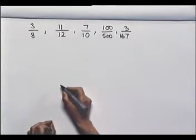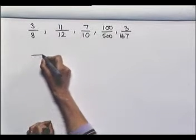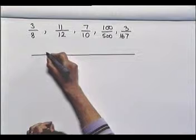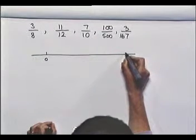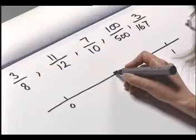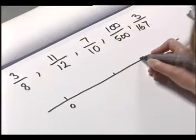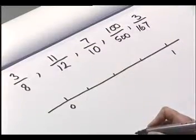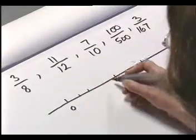Now we've looked at representing fractions using a piece of card, a circular representation, and a rectangle with our bar of chocolate. Let's have a look at one more before we move on — let's see it on a section of number line. So let's say we have zero here and one here. To show three eighths, I need to divide my section into eight pieces of equal size.